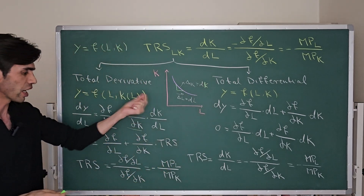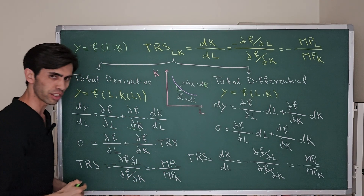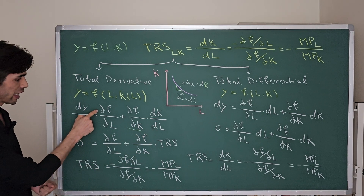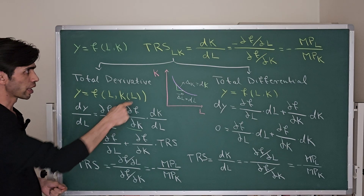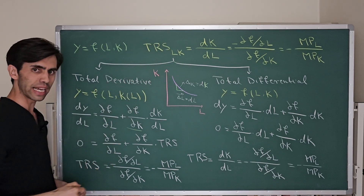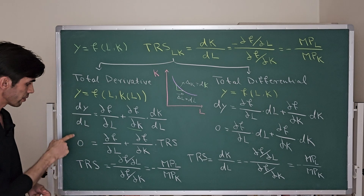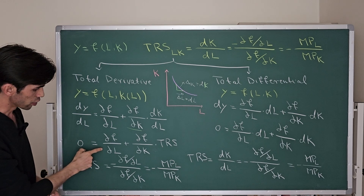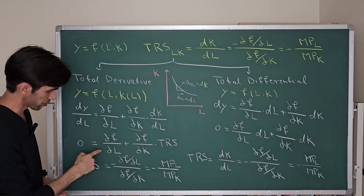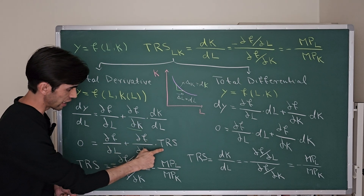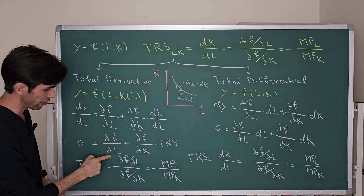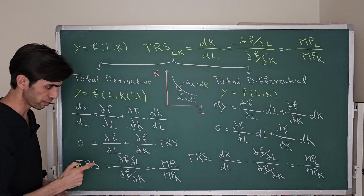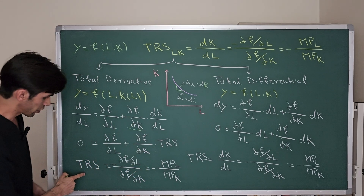As we know by definition, dK/dL is equal to the Technical Rate of Substitution. So instead of dK/dL we can write TRS. And by the definition of TRS, there is no change in output level, so the effect of change in labor on output level will be zero. So we have: partial derivative of f with respect to L plus partial derivative of f with respect to K multiplied by TRS equals zero.